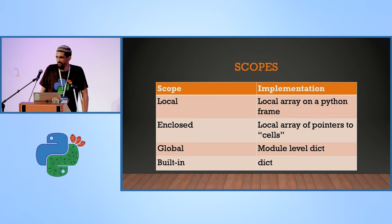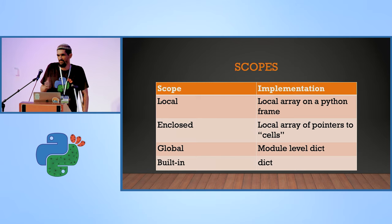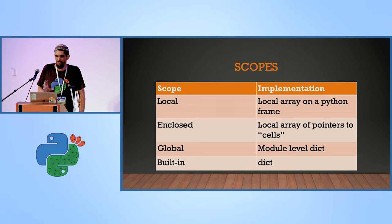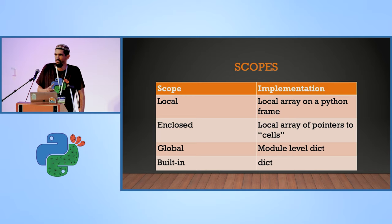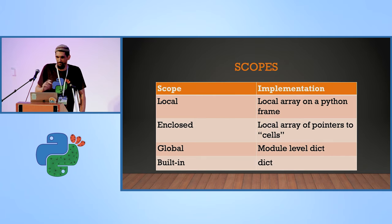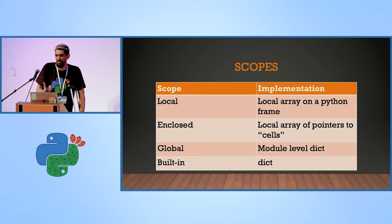A bit of implementation detail: the local scope in Python is implemented as an array — an array of pointers to Python objects. When Python compiles code, it knows which variables are local, and at runtime just uses indexes in this array to access them. This is the local scope. The enclosed scope is a bit more tricky — you have an array of cells, and the reason you have these cells is when you need a pointer indirection, because you can view an object defined in the outer scope and you want the ability to see changes.